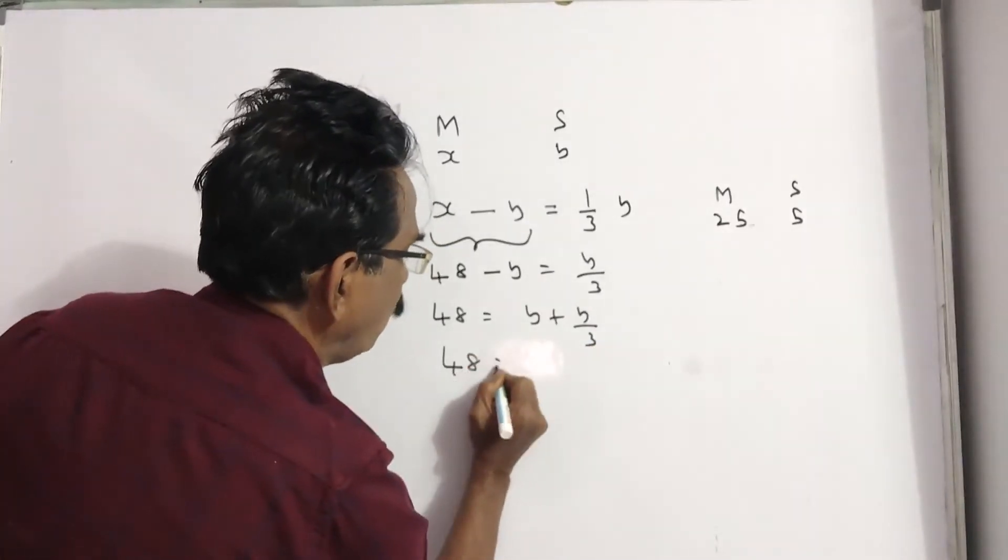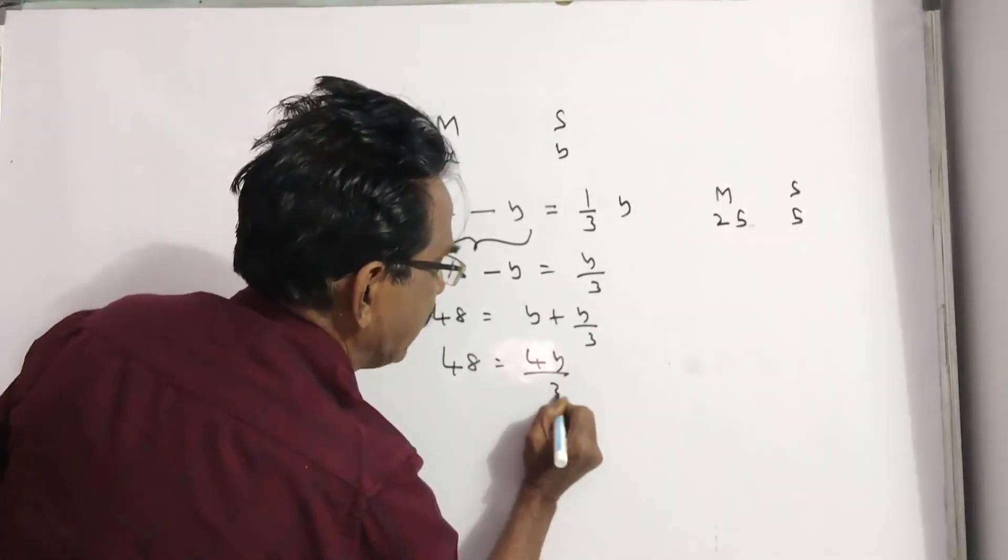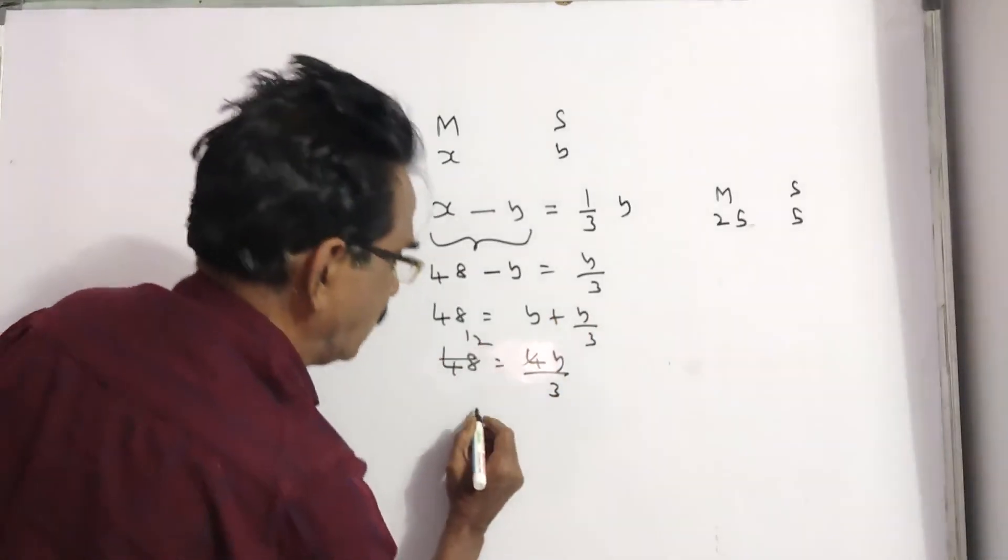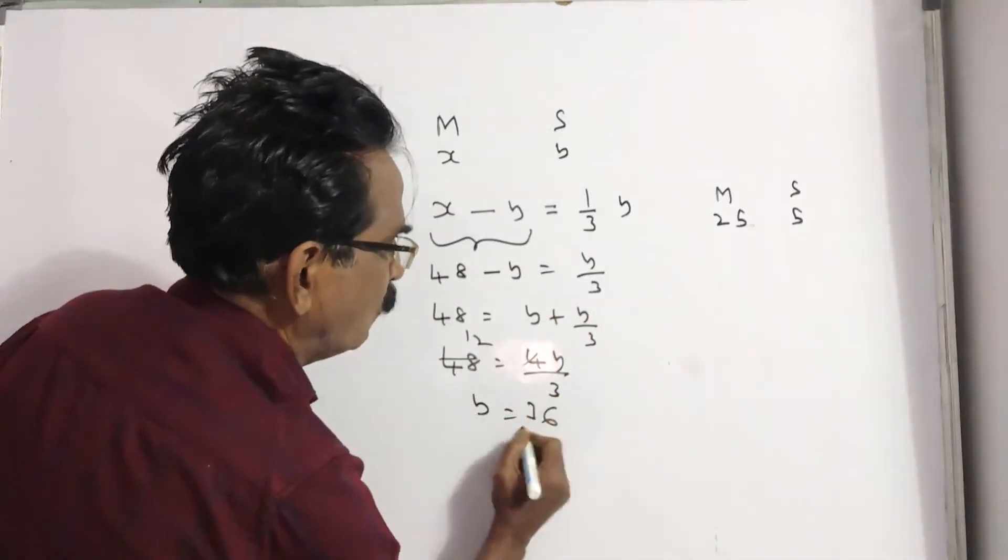So, 48 is equal to 4y by 3. 3y plus y is 4y. 4 times 12 is 48, so y is equal to 36.